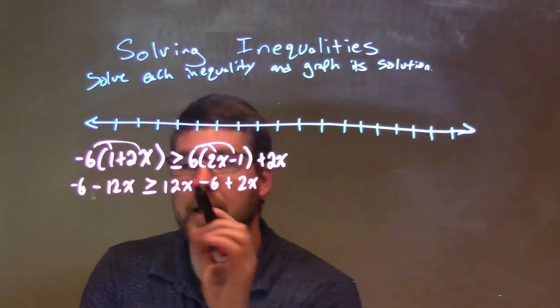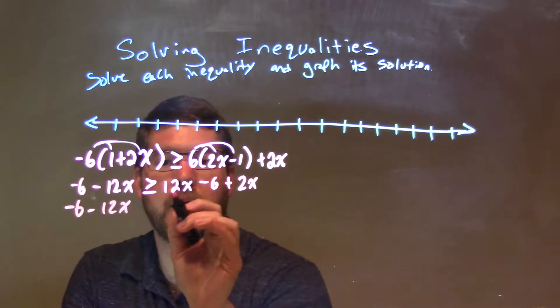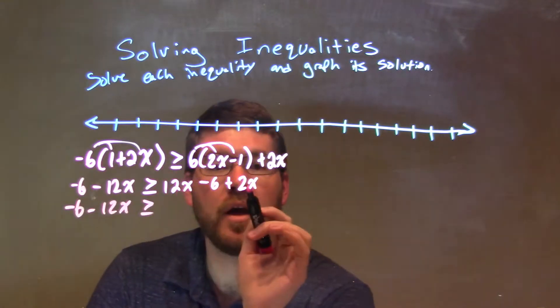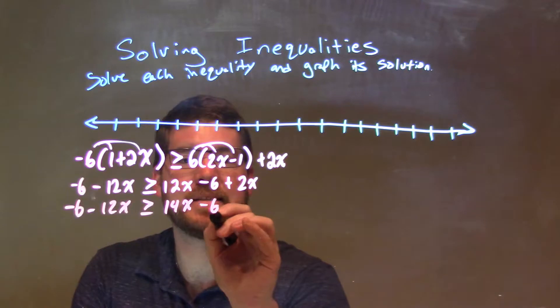Now I'm going to simplify this right hand side. I'm going to leave the left hand side the same. I'm just going to bring these two numbers together. The x's, 12x plus 2x is a 14x. So we have 14x minus 6.